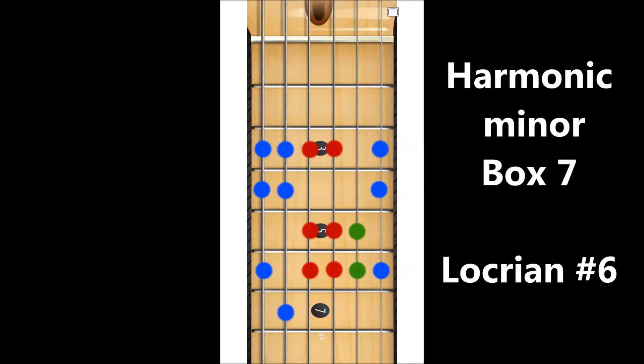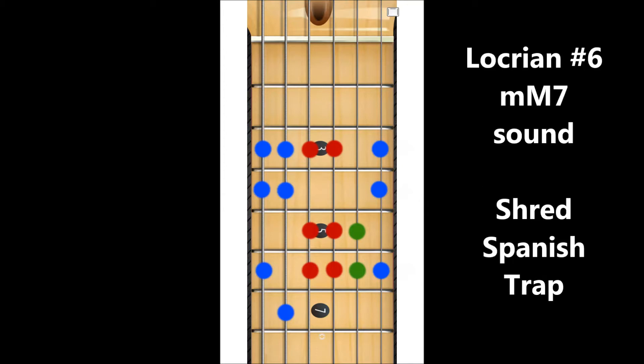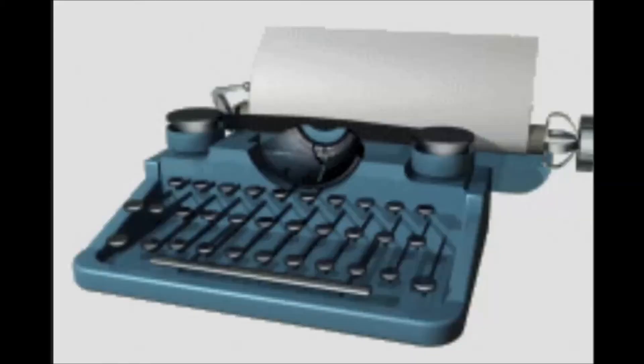There you have it. Harmonic minor box 7. Use this in trap music, neoclassical shred, Joe Satriani, Steve Vai stuff, when you want to have that kind of dark tone to your riffs and runs.